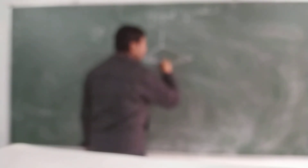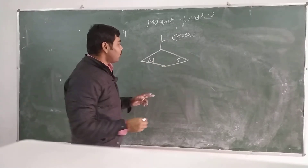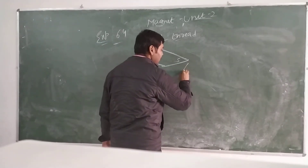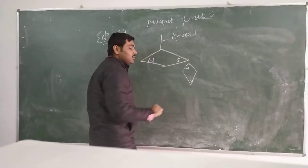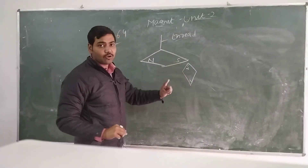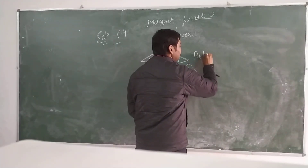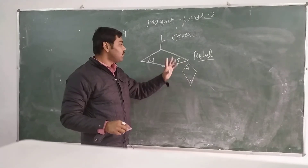In Investigation 6.4, they have taken a magnet with a north pole and south pole, tied by a thread. When another magnet is brought close — bringing the south pole of the second magnet closer to the south pole of the first — they will repel each other.